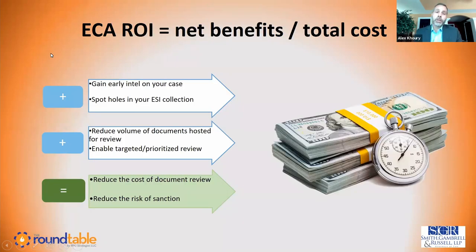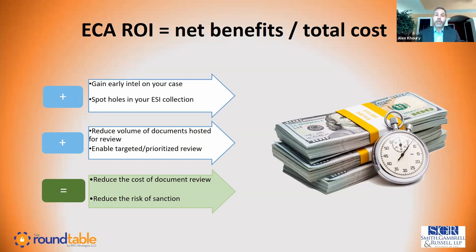Return on investment means: what are the benefits and how do we weigh that against the cost of ECA? ECA costs vary depending on what you're doing, how you're doing it, and who your vendor is. Some vendors will give you ECA at a reduced hosting cost; some will even host for free, giving you a low-cost repository to keep your data and do analysis to gain early intelligence on your case. It's very effective for spotting holes in your ESI collection — a great way to avoid litigation down the road. You can see oversights before your opponent discovers them. It also allows you to reduce volume of documents to be hosted, which is the greatest cost reduction in any discovery. And it enables targeted and prioritized review.